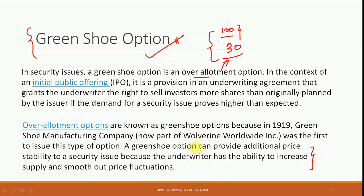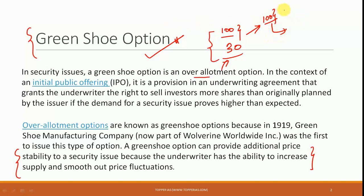The function of this option is that a green shoe option can provide additional price stability to a security issue, because the underwriter — which is the investment banker — has the ability to increase the supply and smooth out price fluctuations. For example, if 100 shares are being sold, there could be huge demand in some cases, leading to severe price fluctuations. If a green shoe option is available, more shares will be issued in case of high demand, and as a result the fluctuation in prices can be controlled and better price stability is ensured.